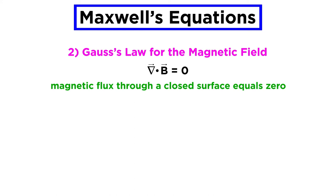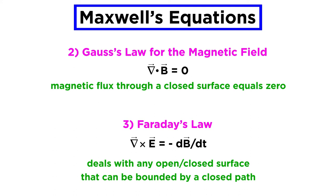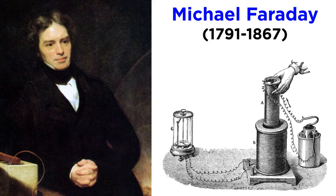Remember, Gauss's law for the magnetic field states that the magnetic flux through a closed surface must be zero. Faraday's law deals with any surface, open or closed, that can be bounded by a closed path.